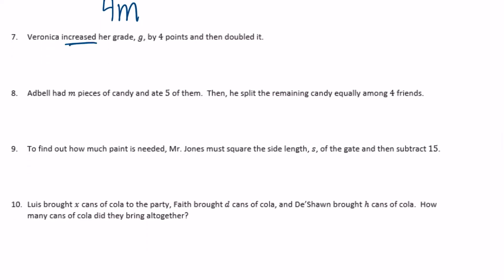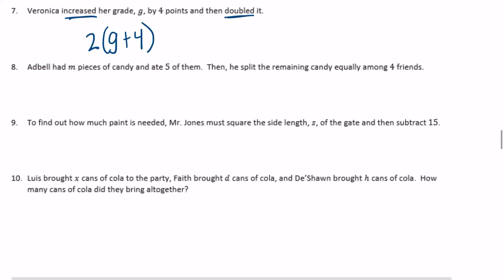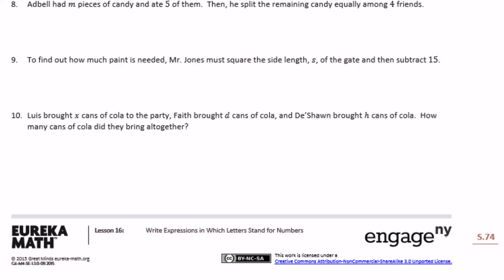Number 7: Veronica increased her grade G by four points, then doubled it. She increased G by 4, giving G plus 4, then doubled it — times two — so 2(G + 4). Number 8: Abdel had M pieces of candy and ate five of them, then split the remaining candy equally among four friends: M minus 5 gives the remaining candy, then divided by 4 — so (M − 5) over 4.